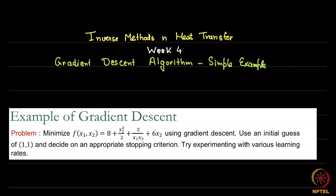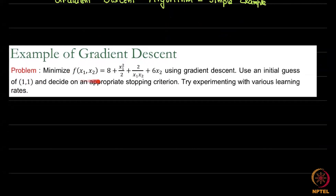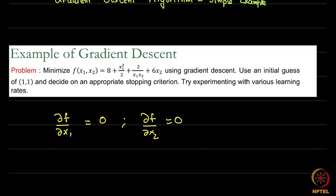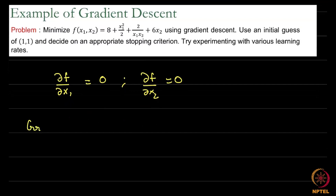Let us look at this simple case — suppose we want to minimize this function. It is kind of hard to know the analytical solution, though you can theoretically calculate it by taking the derivative of f with respect to x1, setting it to 0, and del f del x2 equal to 0. This gives the theoretical solution. But when we want to do gradient descent to find the minimum, we start with some arbitrary guess — in this case, the initial guess is 1 comma 1.